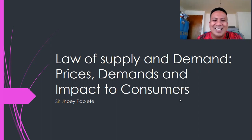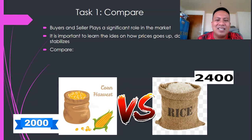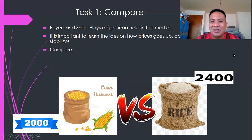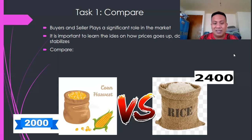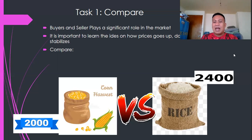Your first activity is to compare buyers and sellers, who play a significant role in the market and actually dictate if an institution is going to survive or not. It is important to learn the ideas on how prices go up, go down, and destabilize. Compare these two: a sack of corn costing 2,000 pesos versus a sack of rice costing 2,400 pesos. If you are the buyer, which one would you buy?